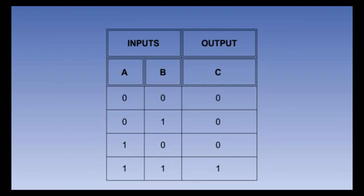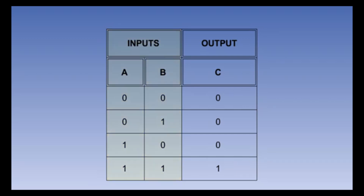Truth tables are a systematic means of displaying binary data. They illustrate the relationship between a logic gate's inputs and outputs. This type of data display could be used to describe the operation of a gate.